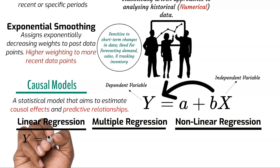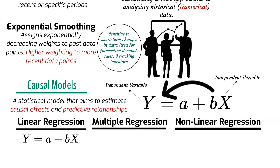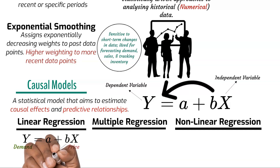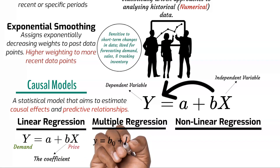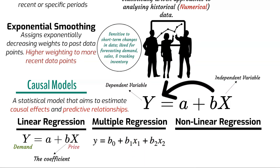Linear regression models are the most common type of causal regression models, which assume a linear relationship between the dependent variable — for example, demand for a product — and one or more independent variables such as price, advertising spending, and economic indicators. Linear models are used to estimate the coefficients or weights of the independent variables to predict the value of the dependent variable. When there are multiple independent variables identified in the same model, a multiple regression model is used, allowing for the consideration of several factors simultaneously. The model estimates coefficients for each independent variable, indicating the strength and direction of their impact on the dependent variable.